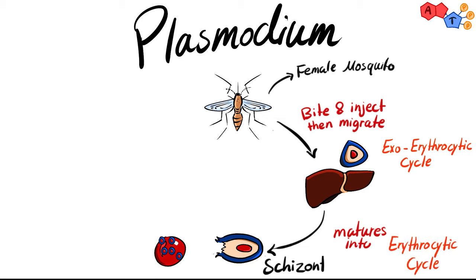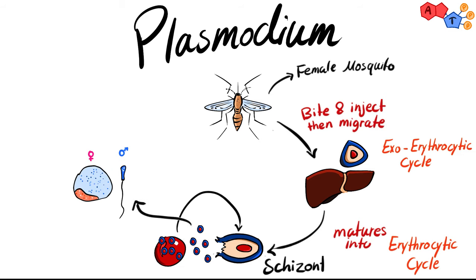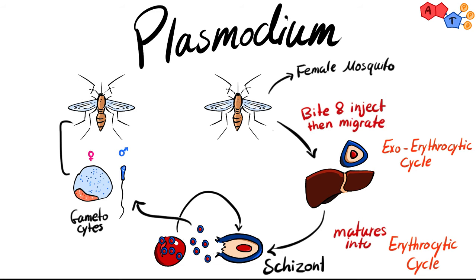The merozoites invade red blood cells — this is the erythrocytic cycle. From here, merozoites have two pathways: some grow into schizonts again, rupture, release more merozoites, and the cycle repeats. Others develop into the sexual forms — male and female gametocytes — which are taken up by the mosquito, where sexual reproduction takes place and the cycle begins again.